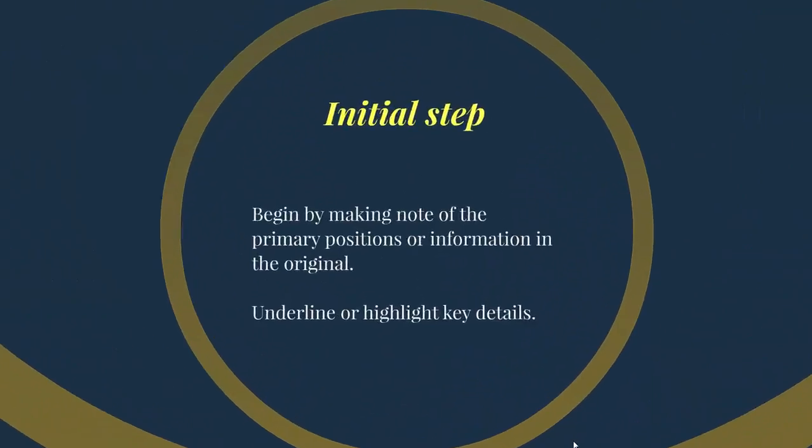An initial step when preparing a summary is to begin by making note of the primary positions or information in the original. One way to do this is to underline or highlight key details within the original source. Pay particular attention to any specific supporting details that would be important to include — details your reader would need in order to have a full understanding of what happened in the original, even if that reader is not going to read it themselves.